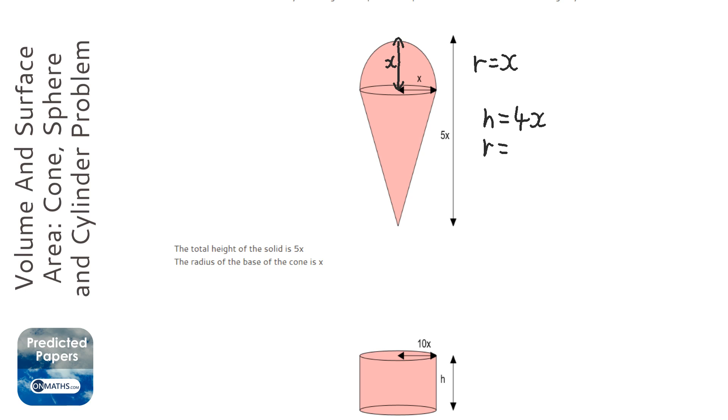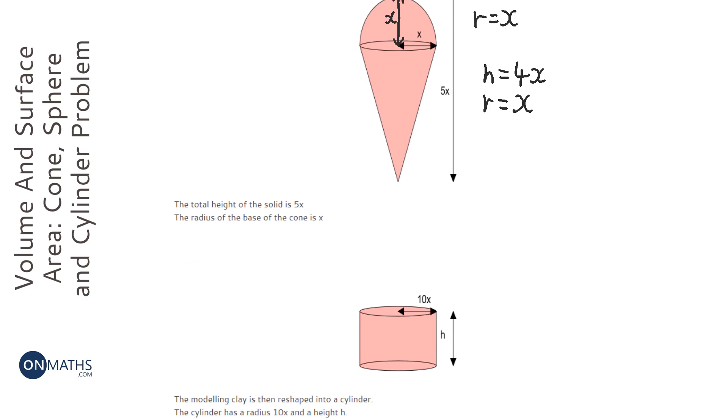We know the radius of the cone is going to be x because it's stated at the top, so let's keep going. The radius of the cylinder is going to be 10x and the height is just labeled as h, so that's nice and simple.